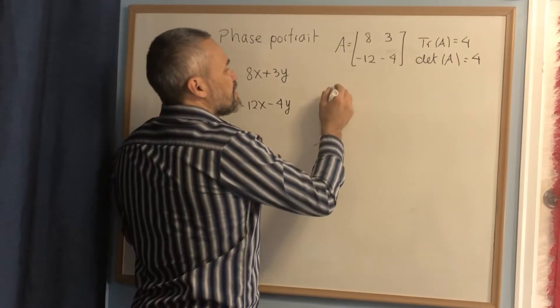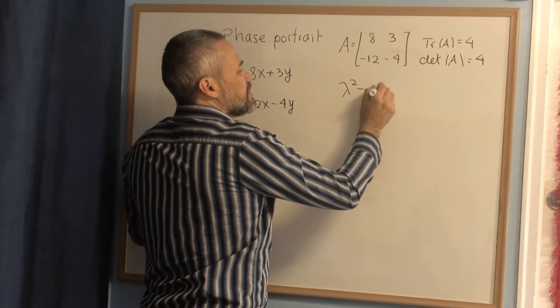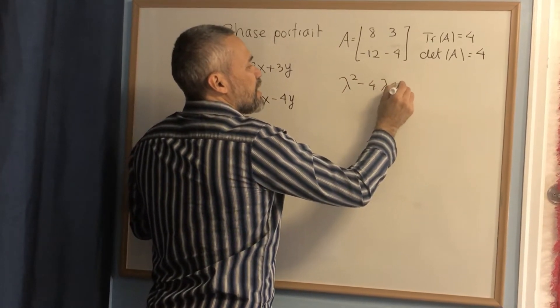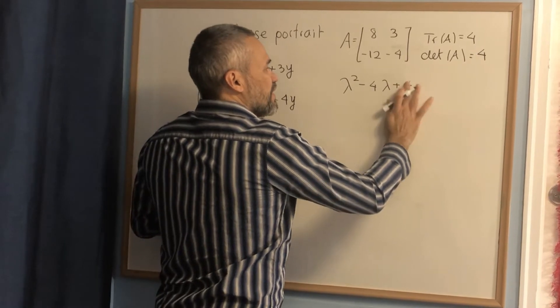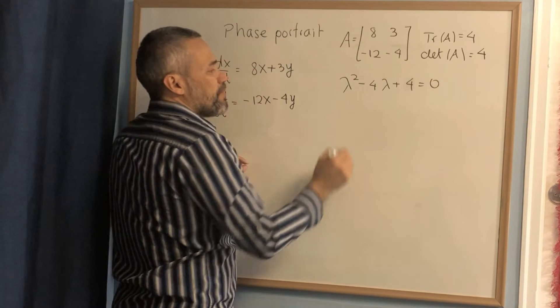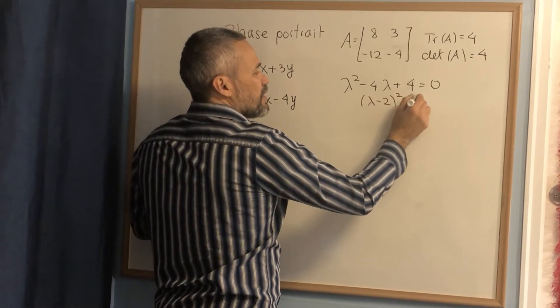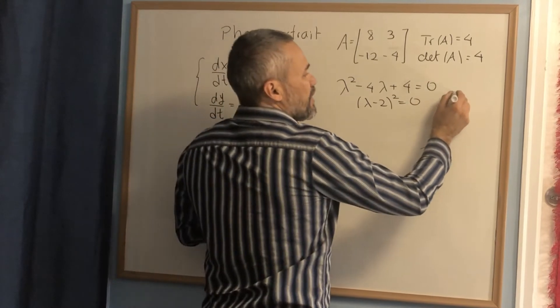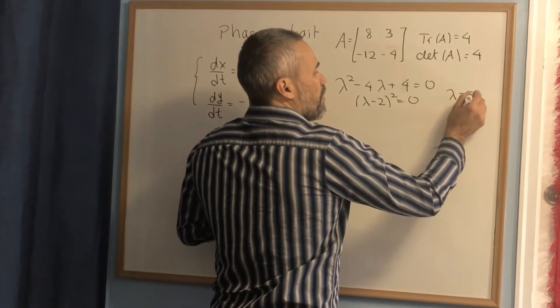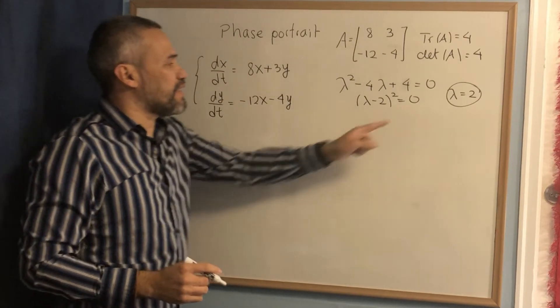That means the characteristic equation is lambda squared minus the trace times lambda plus the determinant of A, which is 4, equals 0. Notice that this time, this is just lambda minus 2 squared equals 0. That means we have only one root, only one eigenvalue.